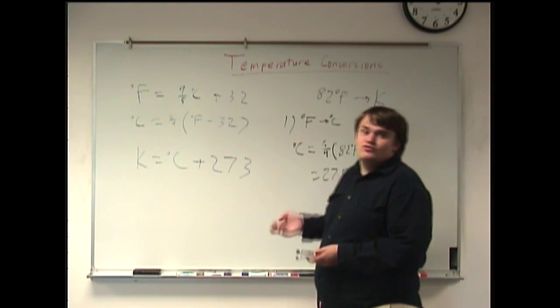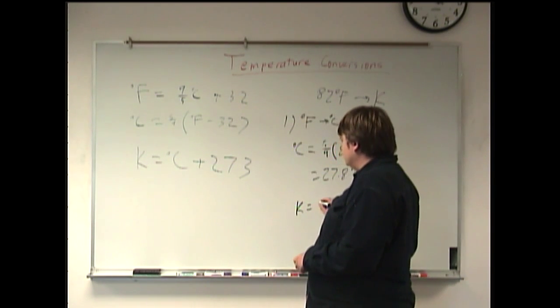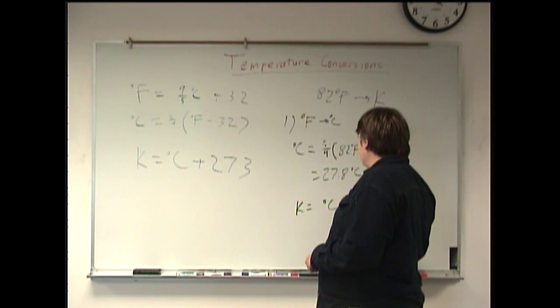And then, of course, we want to convert the Celsius to Kelvins. So, K is just equal to C plus 273.